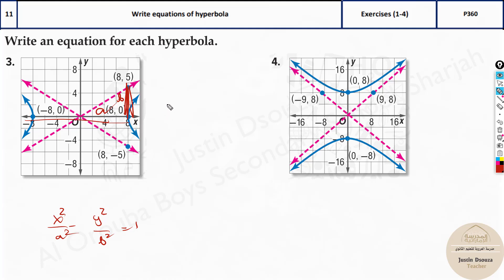So all I need to do is x squared by, this is a value. From here 0 to 8 that will be the a value. Total is 2a. So it'll be 8 squared that is 64 minus. Now don't take this 8. These are all on the same line isn't it? This is the b value. Over here it is minus y squared by b value is 5 squared is 25 equals 1.